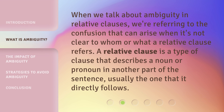When we talk about ambiguity in relative clauses, we're referring to the confusion that can arise when it's not clear to whom or what a relative clause refers. A relative clause is a type of clause that describes a noun or pronoun in another part of the sentence, usually the one that it directly follows.